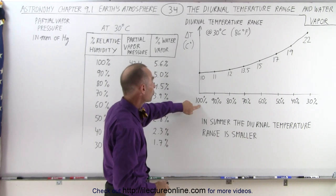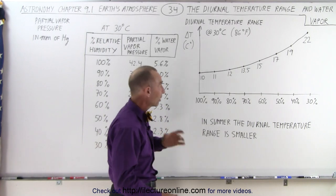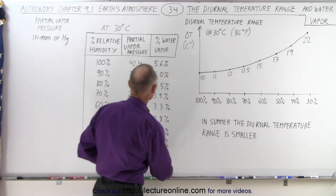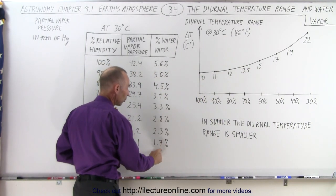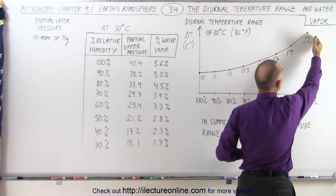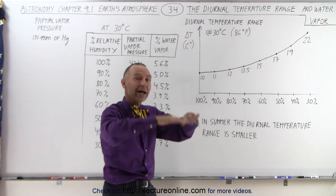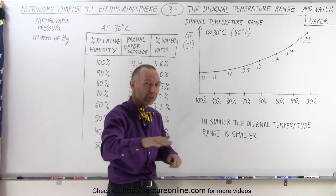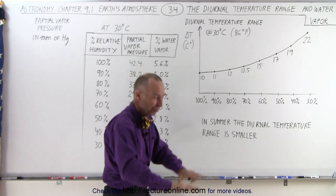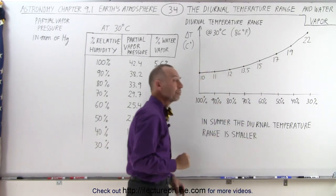Notice that at 100% humidity with a temperature of 30 degrees centigrade, the difference between day and night is roughly about 10 centigrade degrees. But if we drop down to a relative humidity of 30% — from 5.6% water vapor down to 1.7% water vapor — the temperature difference between day and night increases to 22 degrees, meaning much more energy moves from the lower troposphere into the higher troposphere, cooling down the surface quite a bit.